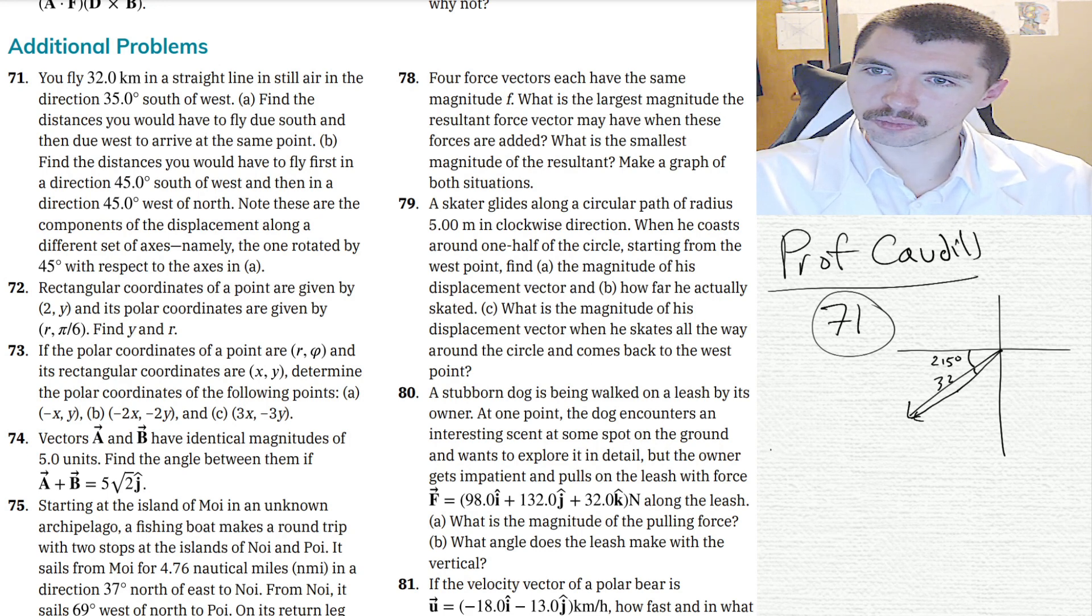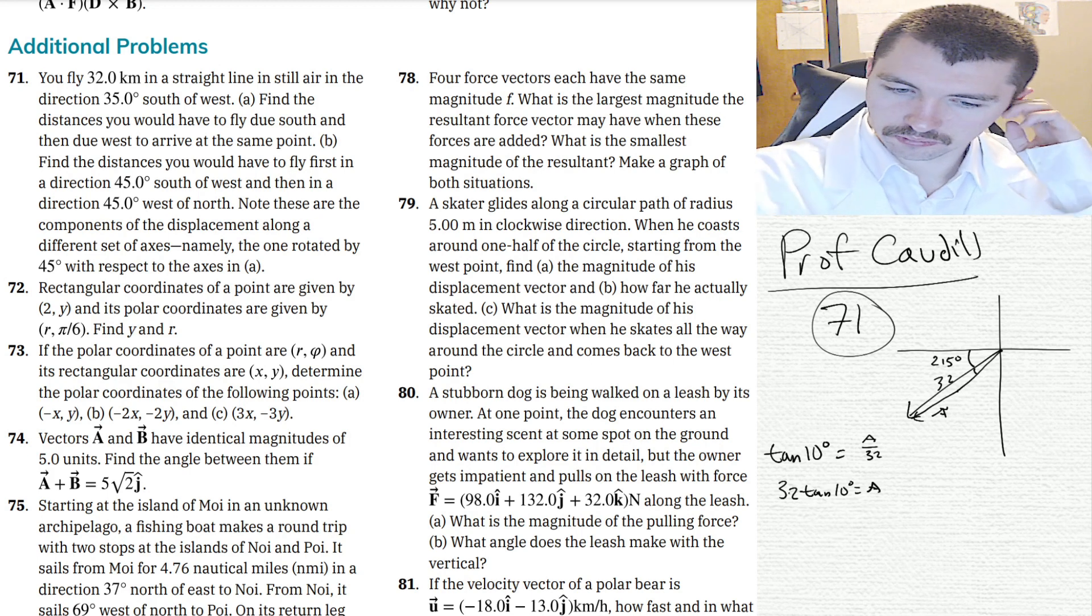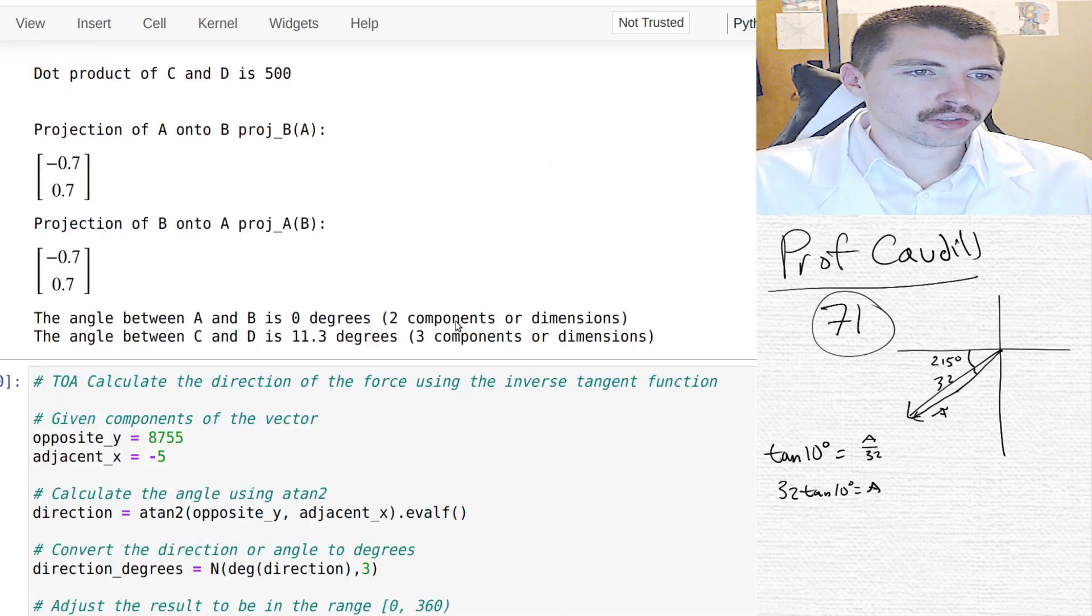So we are going to take, the difference is 10 degrees. We know the hypotenuse. We could say tangent 10 degrees equals opposite over hypotenuse, so a over 32. So 32 tangent of 10.